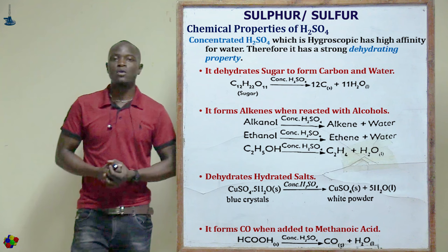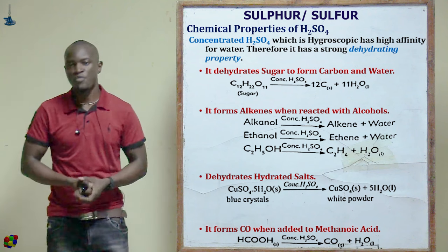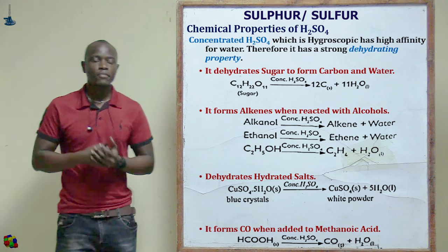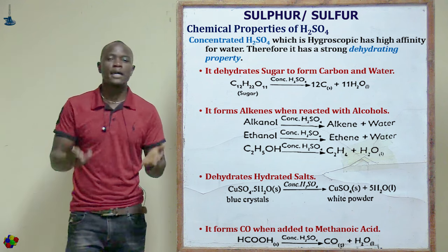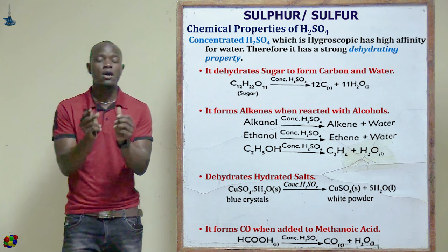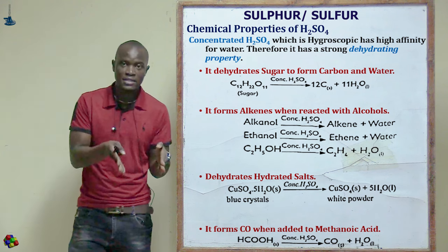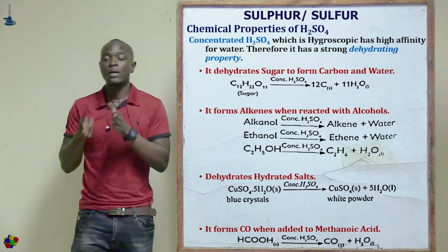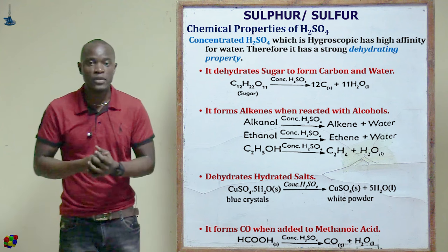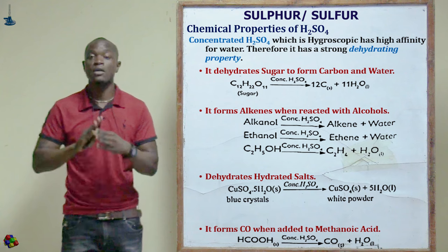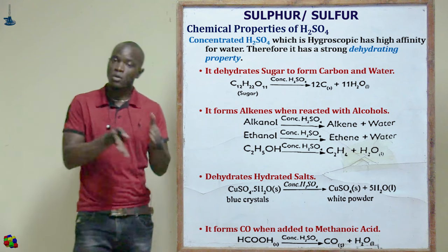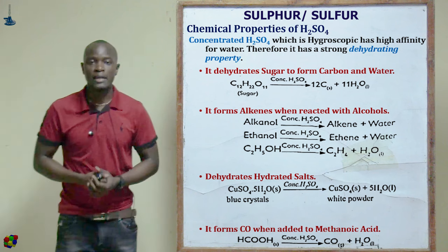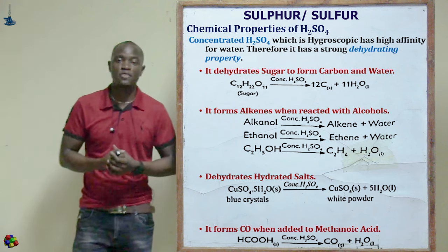Now let's look at the chemical properties of sulfuric acid. We will first look at the chemical properties of concentrated sulfuric acid, then dilute sulfuric acid, because the chemical properties of concentrated and dilute sulfuric acid are not the same — the concentrated form has its own properties and the dilute form has its own properties.